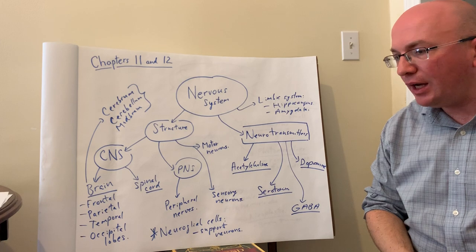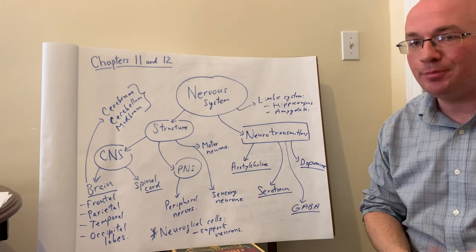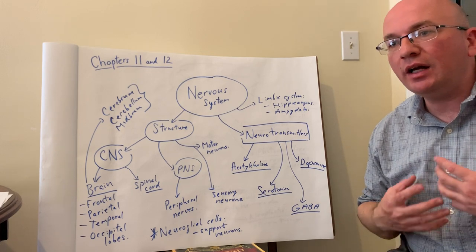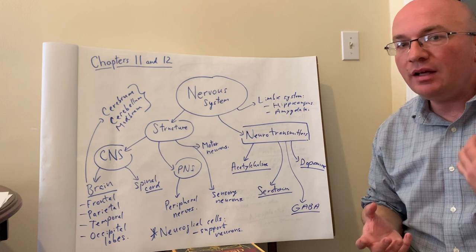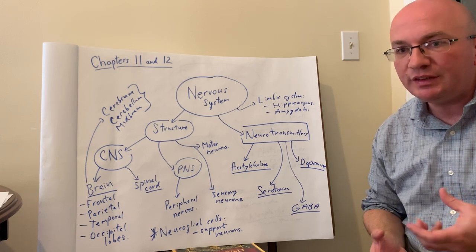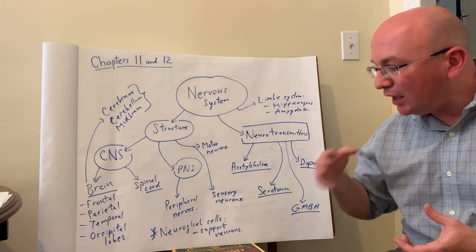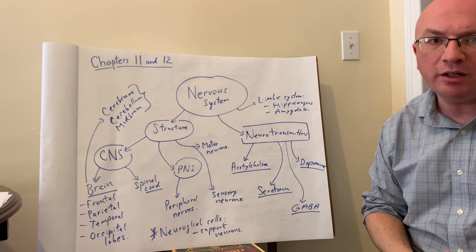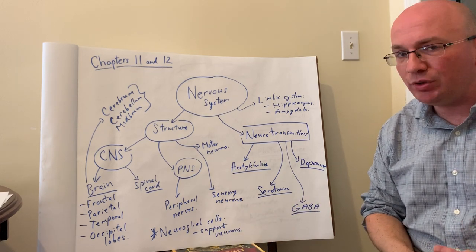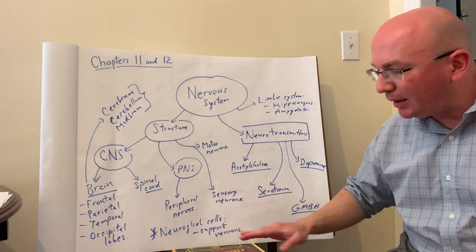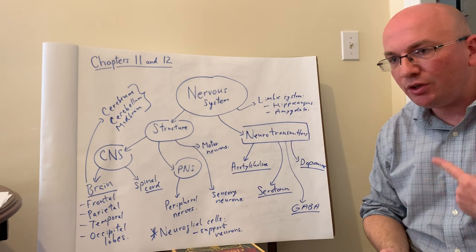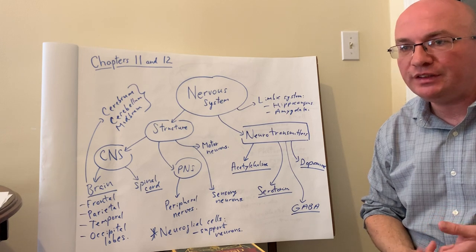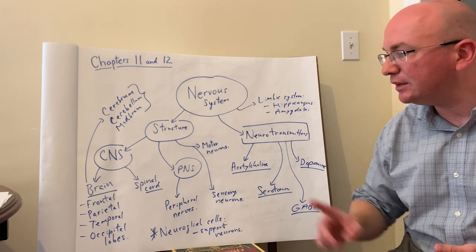We also have neuroglial cells, which are the support cells of the nervous system. Neurons are very large cells that do not have the time or ability to provide even basic nutrition or physical support for themselves, nor can they remove waste or protect themselves. All of those important functions are handled by neuroglial cells such as microglial cells, oligodendrocytes, astrocytes, and many other support cells. They are regular cells, not neurons — they do not communicate or send information. They are there to support and provide physical nutrition and other assistance to the neurons.